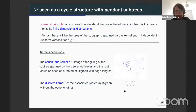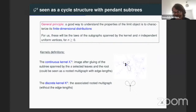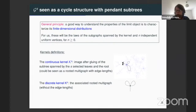We'll have a continuous version and a discrete version of the kernel. In the picture, there is a representation of the normalized connected component G_S. The kernel is simply the image obtained after gluing of the S leaves along their path to the root. More generally, the kernel is the image obtained after the gluing of the S leaves along their path to the root in the construction of Guillaume and Christina.